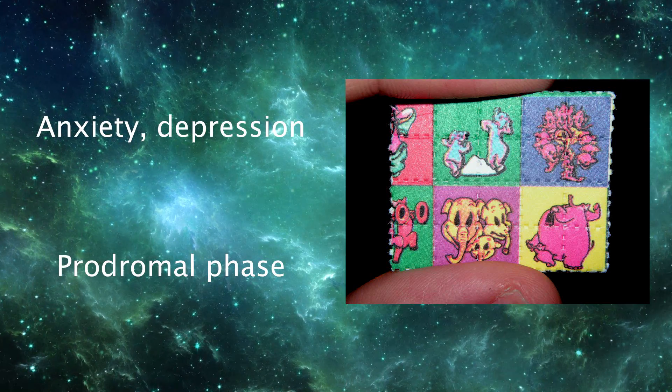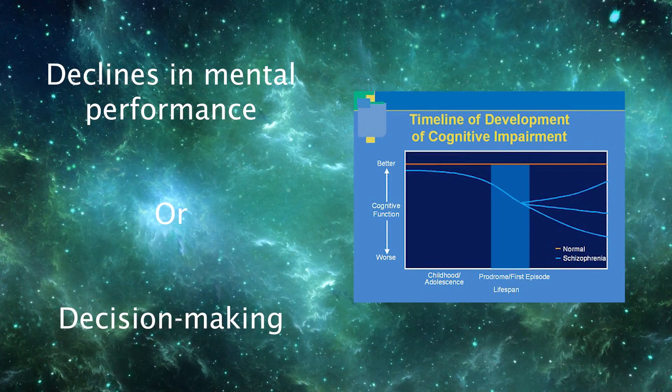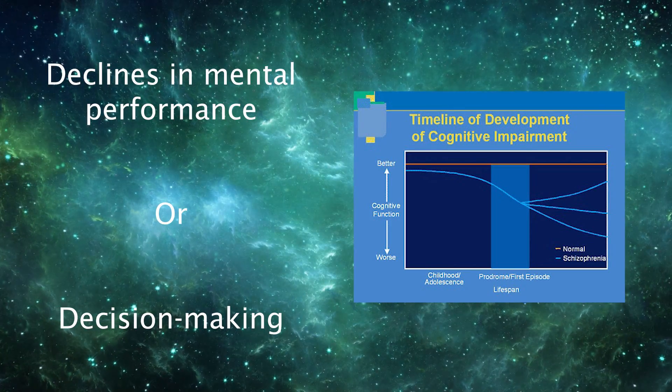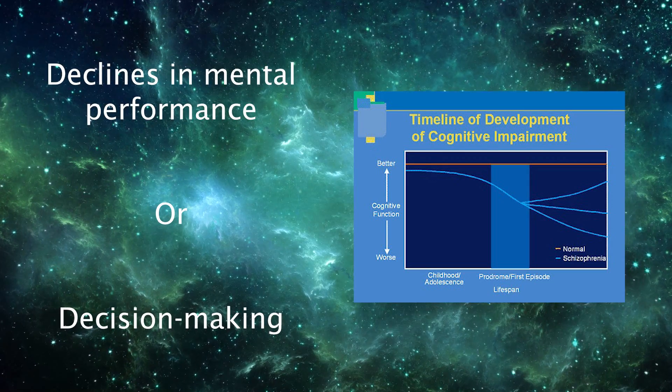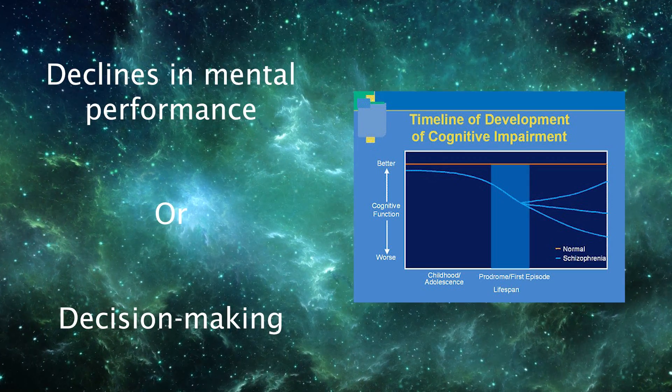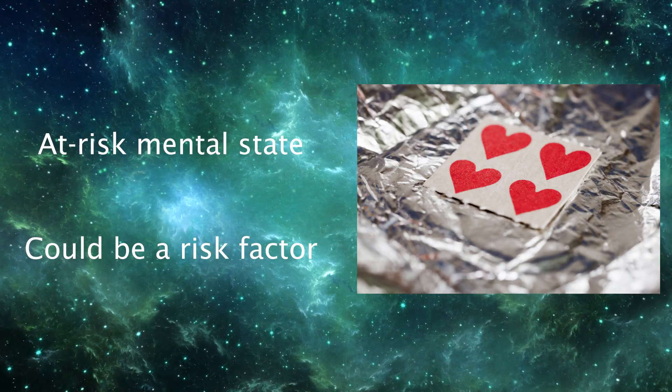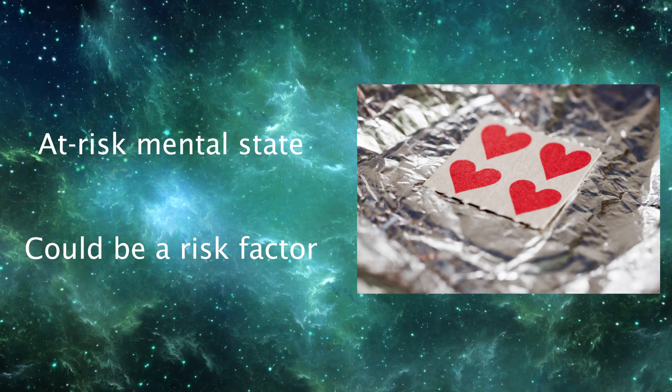Those signs could be as simple as anxiety or depression, both of which can be included in the prodromal phase of schizophrenia. Another thing to look out for are declines in mental performance or decision-making capacity, specifically when those declines don't have another apparent cause. In any of those cases, I'd caution against taking psychedelics. When someone is in an at-risk mental state, I think they could definitely be a risk factor.